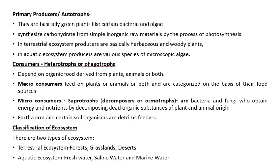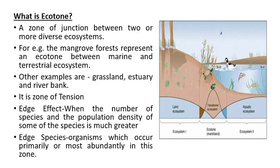Next comes the classification of ecosystems. Basically, ecosystems are of two types. The first one is the terrestrial ecosystem, which includes forests, grasslands, and deserts. The next is the aquatic ecosystem, which includes freshwater, saline water, and marine.